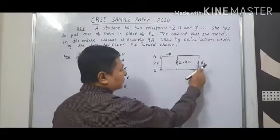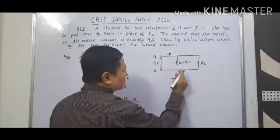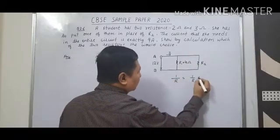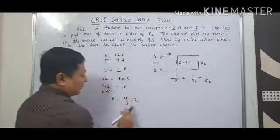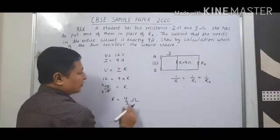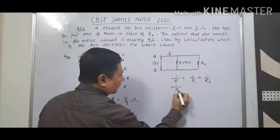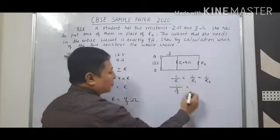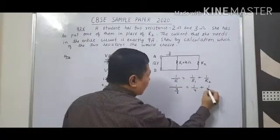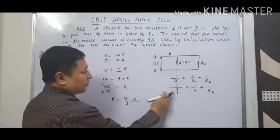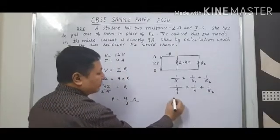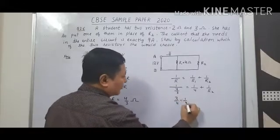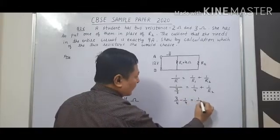Now we have to find R2. Since they are connected in parallel, we use the formula: 1/R = 1/R1 + 1/R2. R is 4/3, and R1 is 4 ohm. So 1/(4/3) = 1/4 + 1/R2, which gives 3/4 − 1/4 = 1/R2.